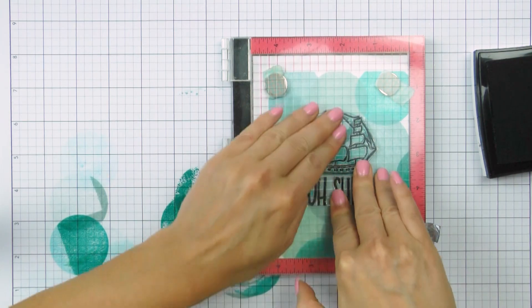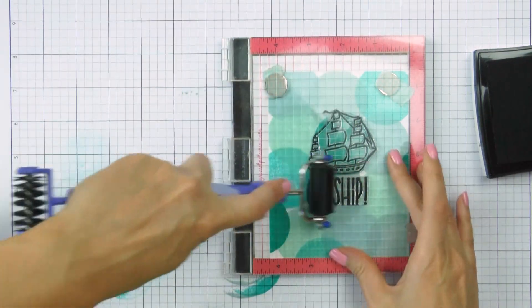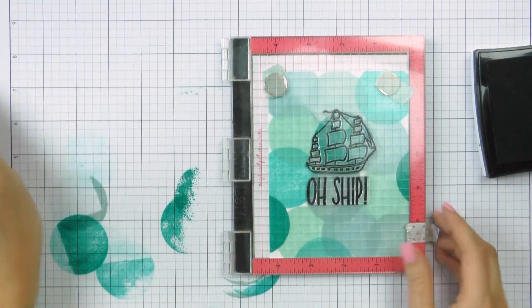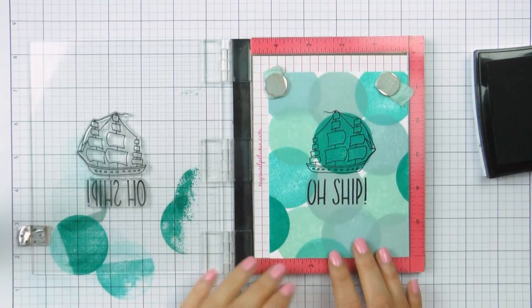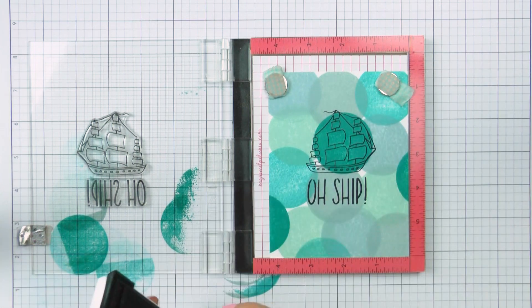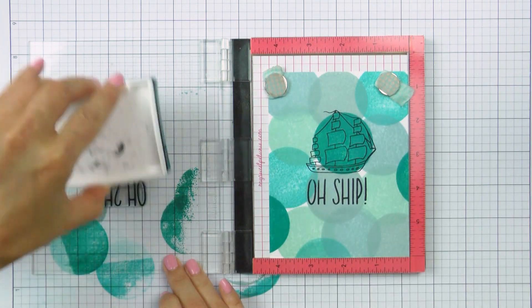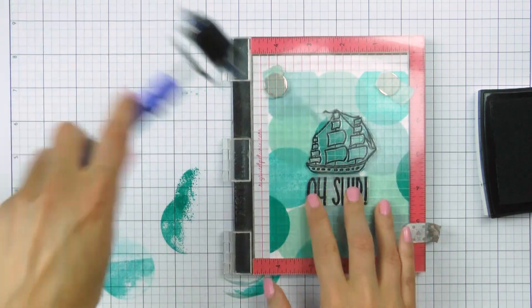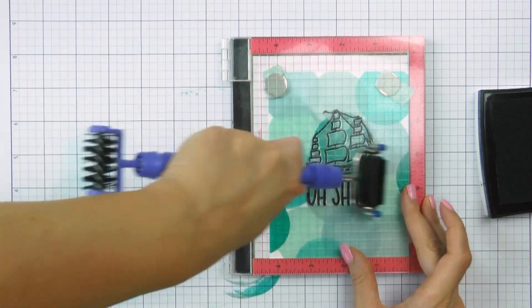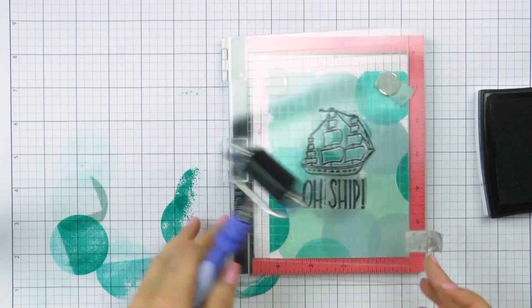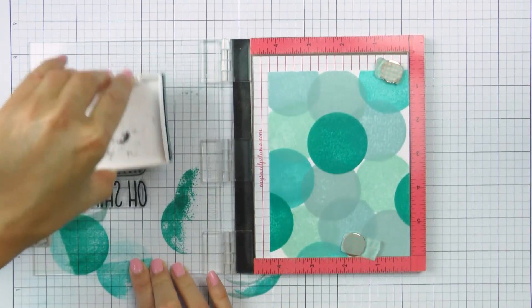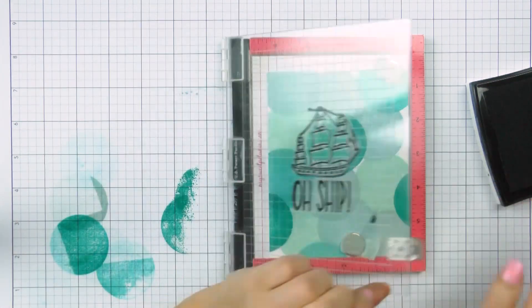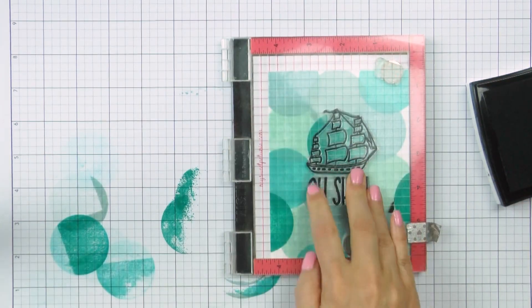In a previous video I shared an ink brayer background technique and I shared that video in a few groups on Facebook. In one of the groups there was a comment about how one can use a brayer to apply pressure to the MISTI. The lady had mentioned that she uses her large brayer to apply pressure when she is stamping with the MISTI stamp positioner and I thought that was a brilliant idea. So I used her tip here with my smaller brayer and I think I'm going to be doing this all the time from now on. This is just very clever and so easy to do, so thank you so much for the tip.